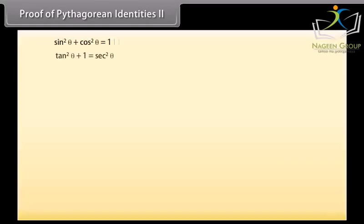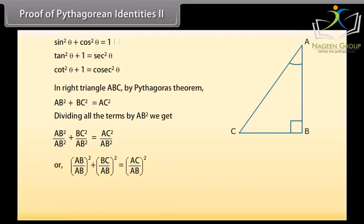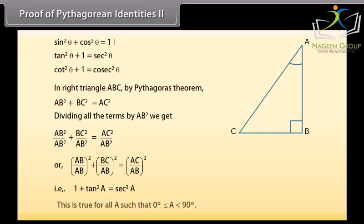Proof of Pythagorean Identity 2: Similarly, we will prove these two identities. In right triangle ABC, by Pythagoras theorem, AB square plus BC square is equal to AC square. Dividing all the terms by AB square, we can write it as AB upon AB whole square plus BC upon AB whole square, giving us 1 plus tan square A is equal to sec square A. This is true for all A such that 0 degree is less than or equal to A, which is less than 90 degrees.